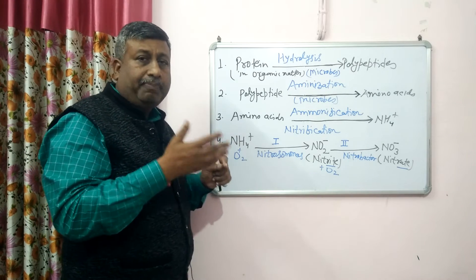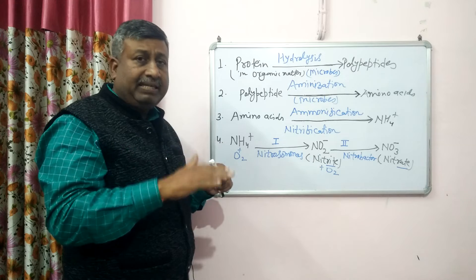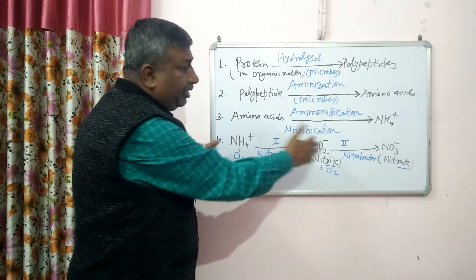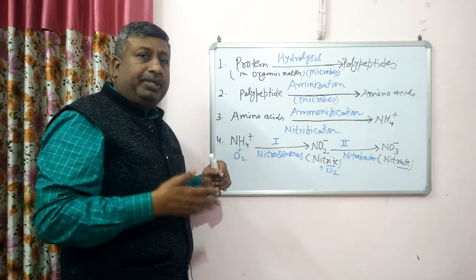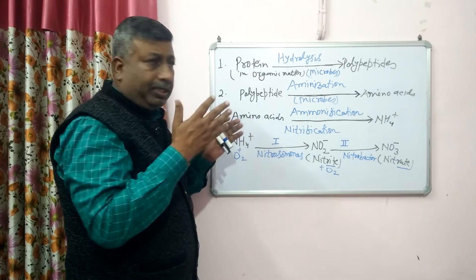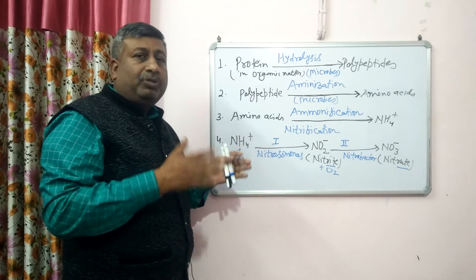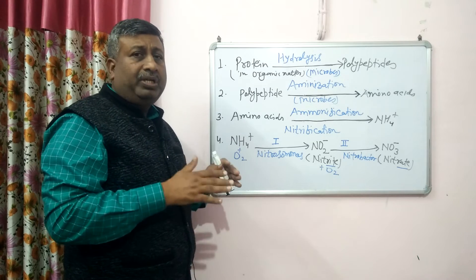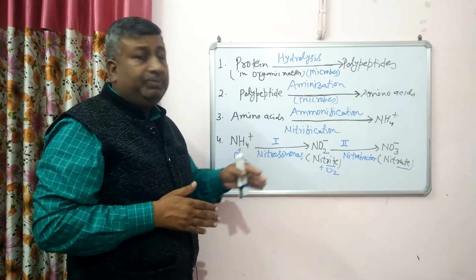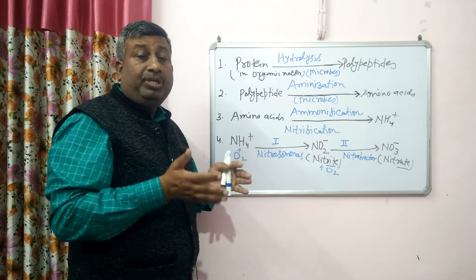If the field is tilled and properly aerated, nitrification is fast. Under anaerobic conditions — such as waterlogging, heavy rain, or heavy irrigation — there is a deficiency of oxygen, and nitrification becomes slow. Under generally aerobic field conditions, ammonium is converted into nitrate, and nitrate dominates over ammonium. That is why plants preferentially take up nitrate, as its concentration is higher in well-aerated soils.